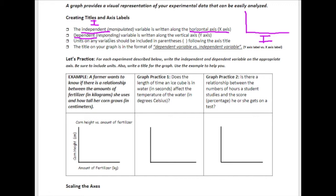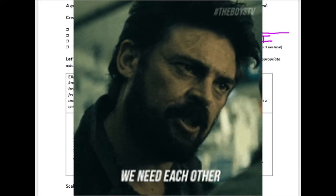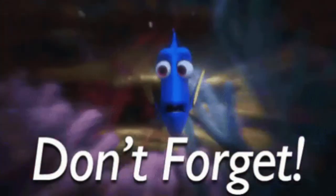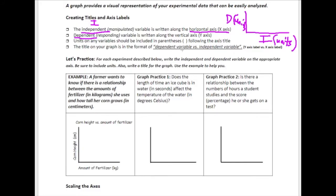The dependent variable — the one that depends on and responds to the independent variable — goes on the y-axis. We always want to include units on our variables so we know what our slope will be; units are written in parentheses on both axes. The title format is dependent versus independent, or y-axis versus x-axis — D versus I. If you remember y versus x, you'll be in great shape.